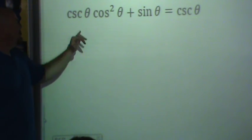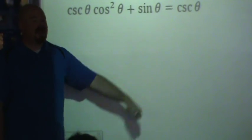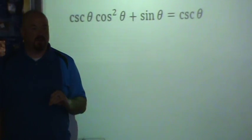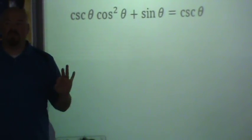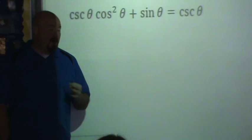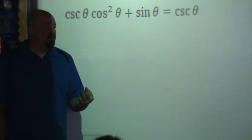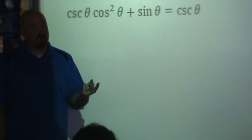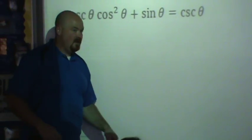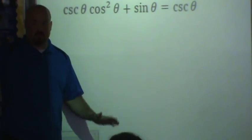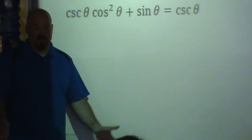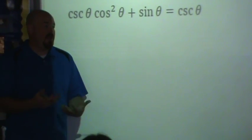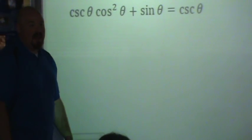I also see cosecant, cosine, and sine. So I see three different trig terms. And then another cosecant over here. Having more than three trig terms might make this more complicated. So maybe I should only have two different types of trig terms, like sine and cosine. So I know that cosecant is one over sine. And scouts honor, I've never done this proof. I have no idea how this is going to go.